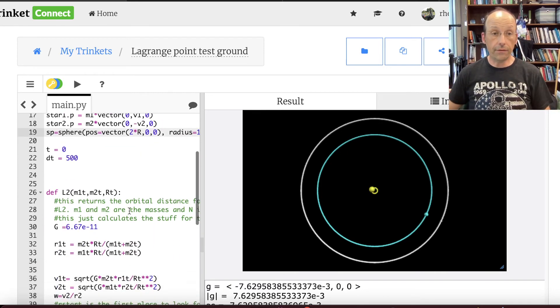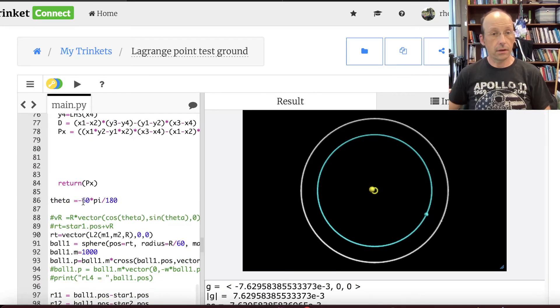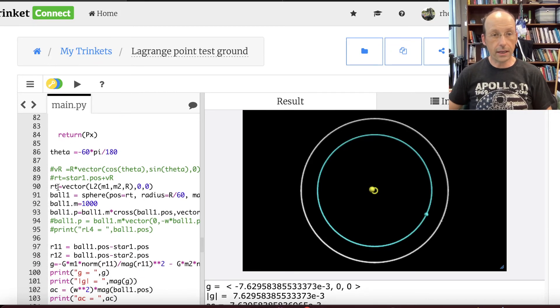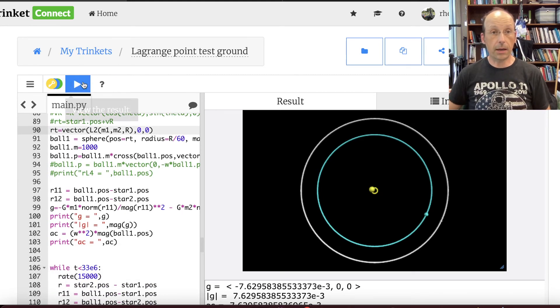I plug it in right here. That's my definition function. Theta doesn't really matter. Rt. I plug it in right there. I got rid of that rstart. And then I put the ball there. Give it a mass. Give it the velocity to be in a circular orbit. And then I let it run. And let's just see what happens.